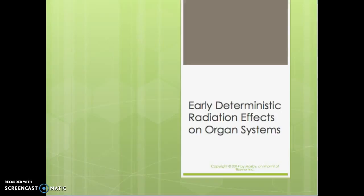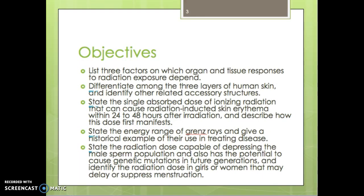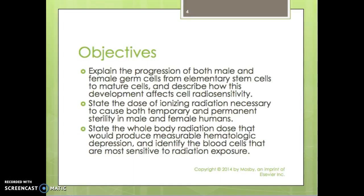This next section of your fluoroscopy course is going to be on biological effects of radiation. It's very important that you read your syllabus and understand your syllabus through these next few chapters. I'm going to talk today about the early deterministic radiation effects on the organ systems. Within this lecture there are a lot of objectives, so go ahead and read through these and make sure you're able to answer all of the questions or statements posed here.